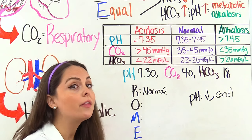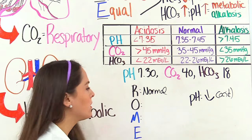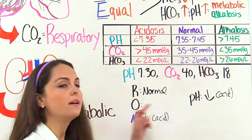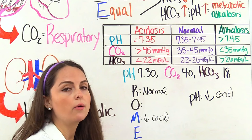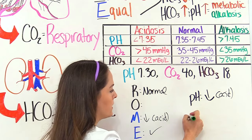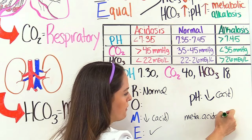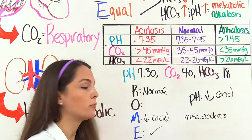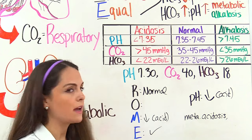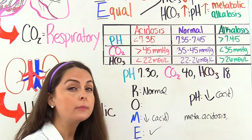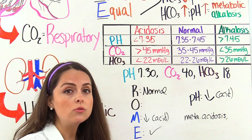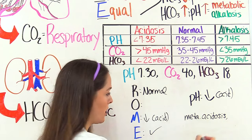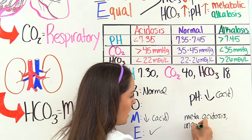Our bicarb is 18. Normal is 22 to 26, so we're low — on the acidotic side. Using ROME, metabolic is low and pH is low, so they're equal — we have metabolic acidosis. Our blood pH is not normal, so we're not fully compensated. The respiratory system is normal, not trying to compensate. So we have metabolic acidosis, uncompensated.